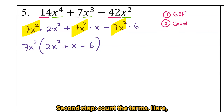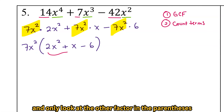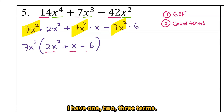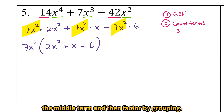Second step: count the terms. Here I'm going to ignore my greatest common factor and only look at the other factor in the parentheses to see if I can factor it more. I have 1, 2, 3 terms. So I'm going to try factoring using the AC method — break apart the middle term and then factor by grouping.